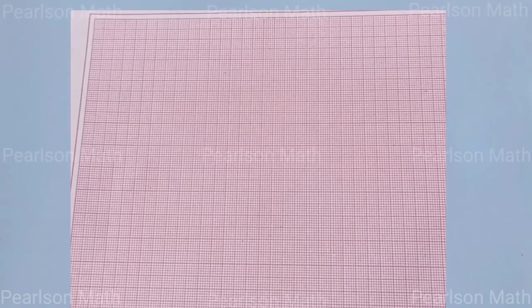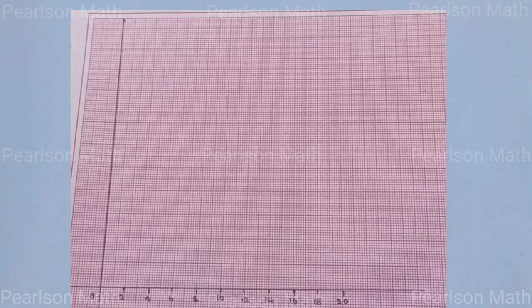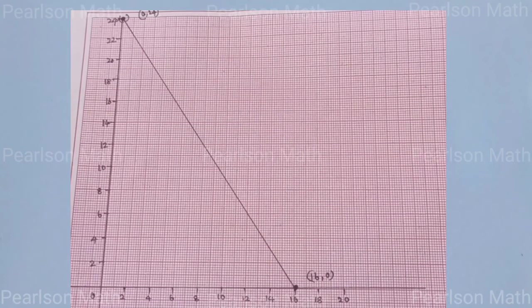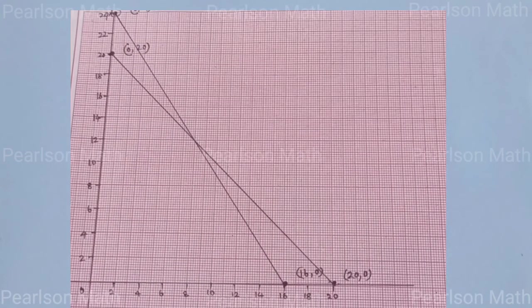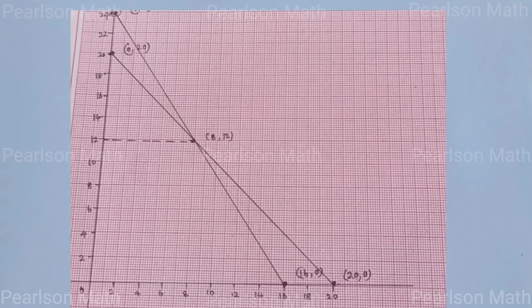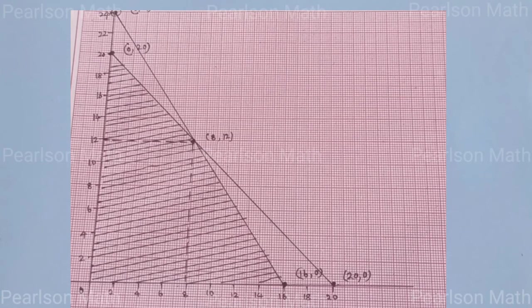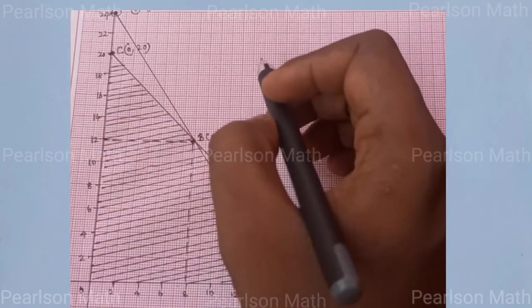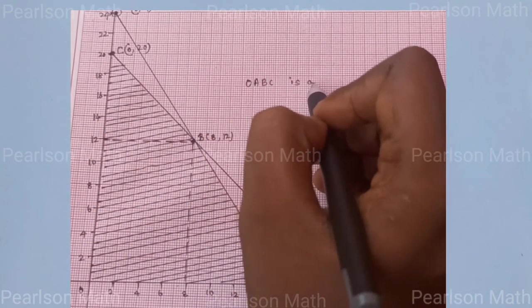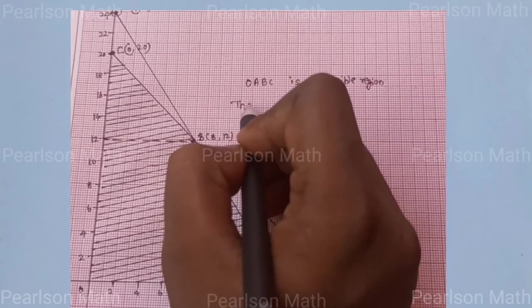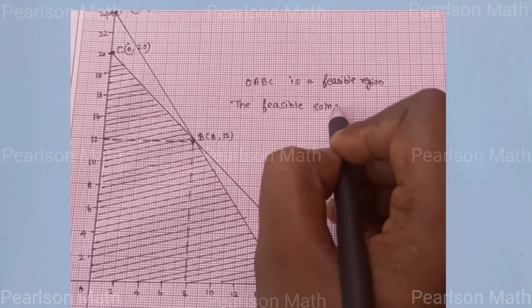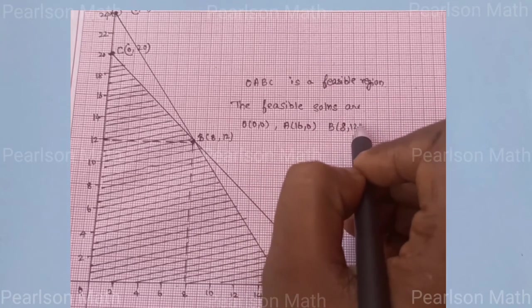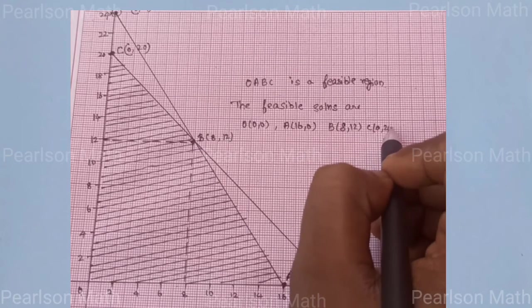Now look at the graph. Draw y-axis and x-axis with 24 units. First equation: points (0, 24) and (16, 0). Second equation: points (0, 20) and (20, 0). Intersection point: (8, 12). The corner points are O, A, B, and C. This is the feasible region. The feasible solution includes O (0, 0), A (16, 0), B (8, 12), and C (0, 20).